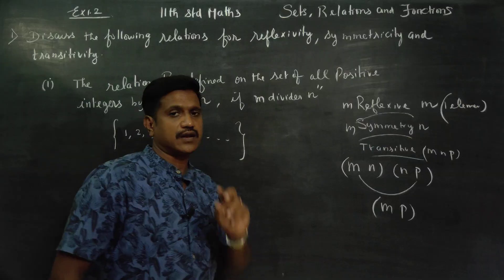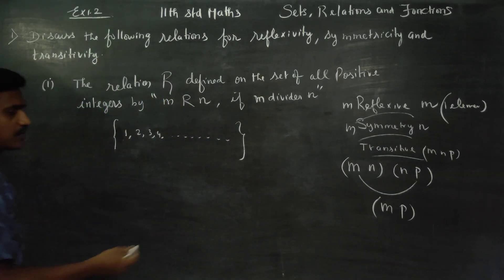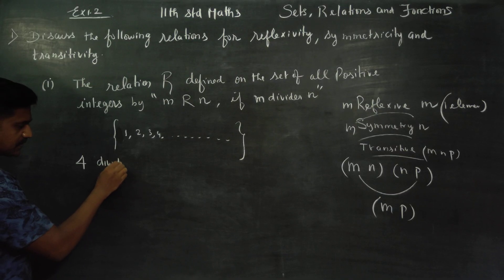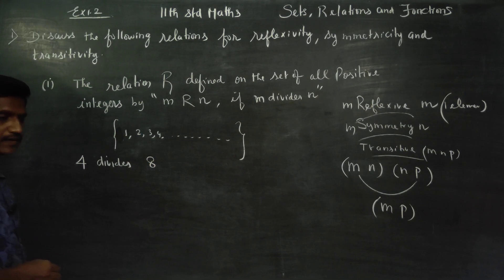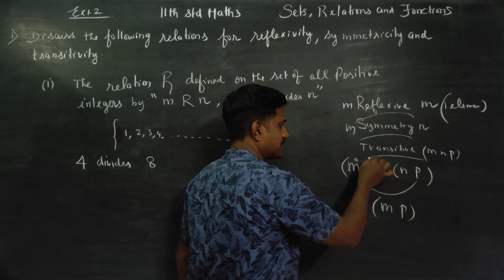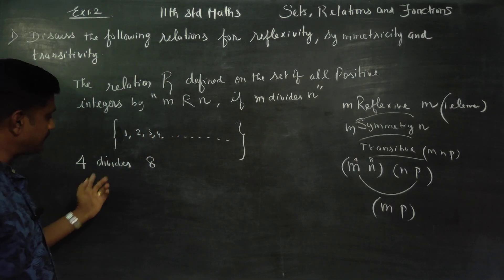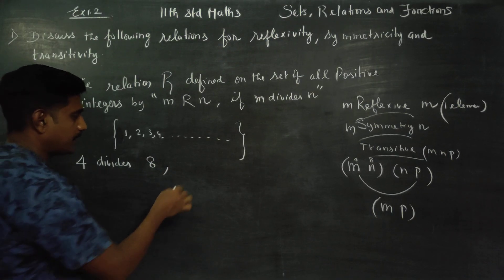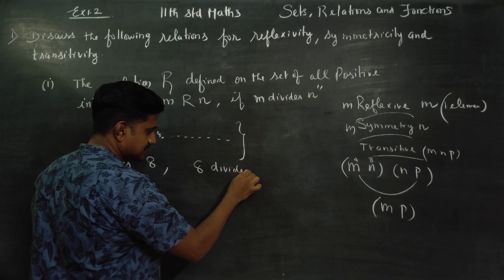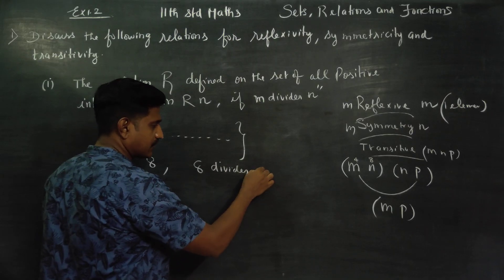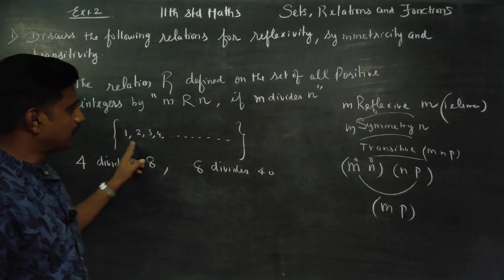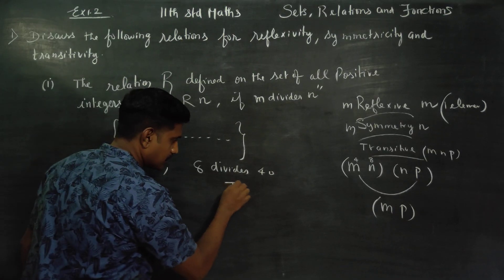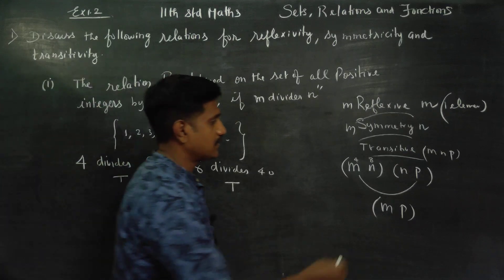Let's choose an example with M and N. Take four, eight, and forty. Four divides eight — this is true. Eight divides forty — eight times five is forty, remainder zero, so this is true. Now four is M, eight is N, and forty is P. Four divides eight and eight divides forty.